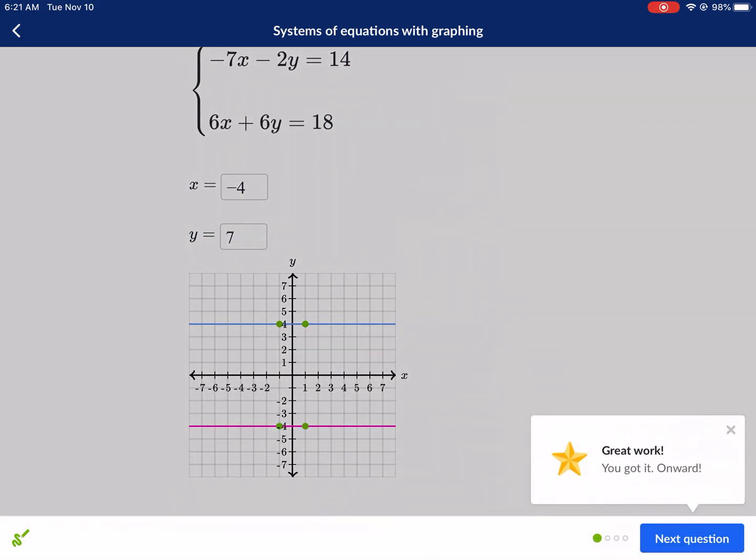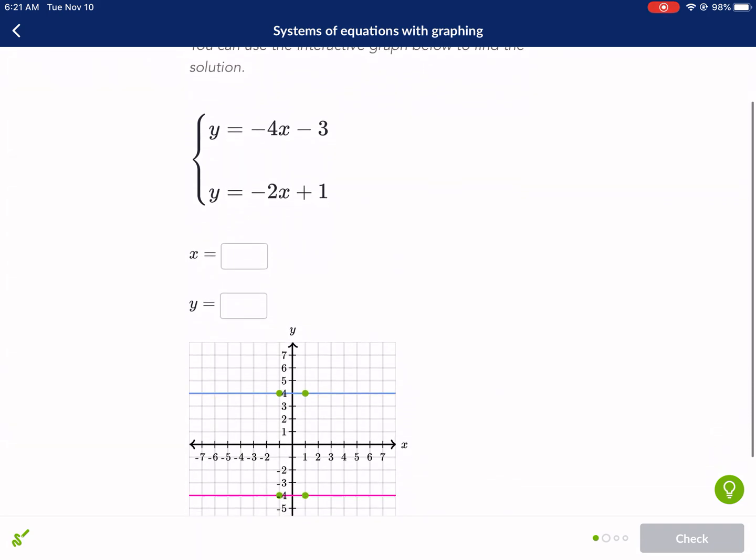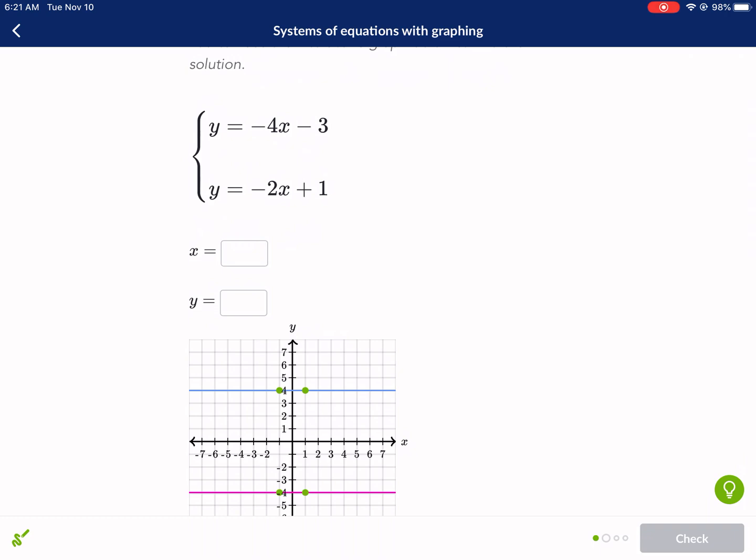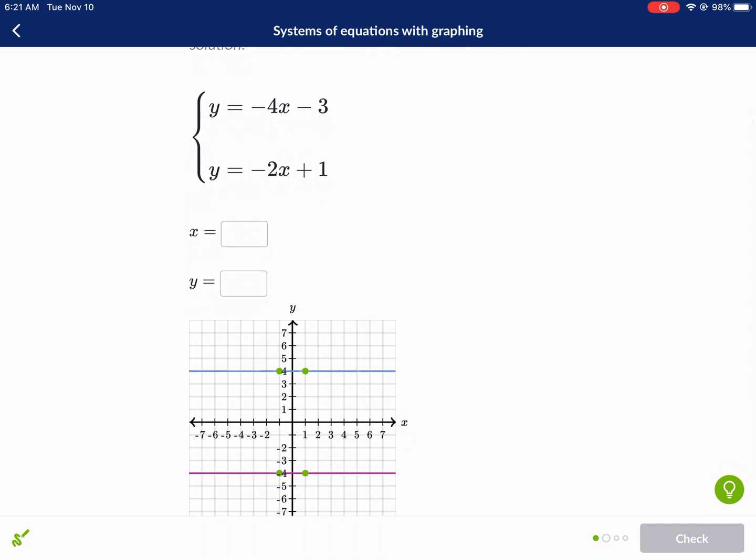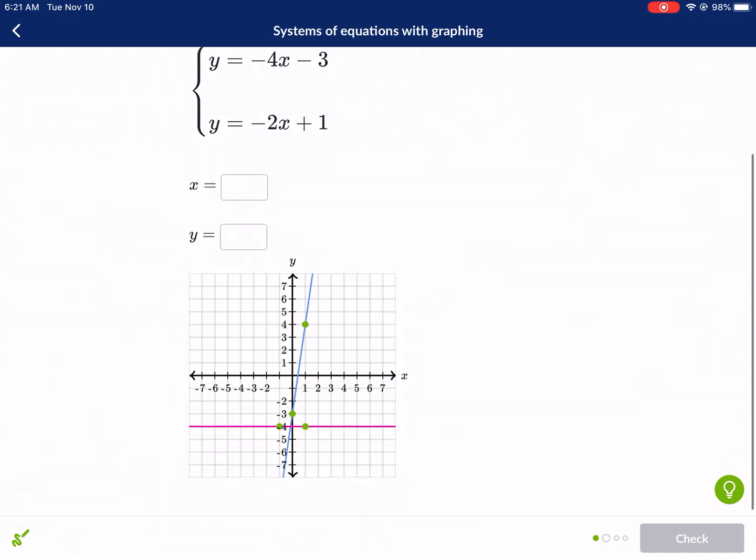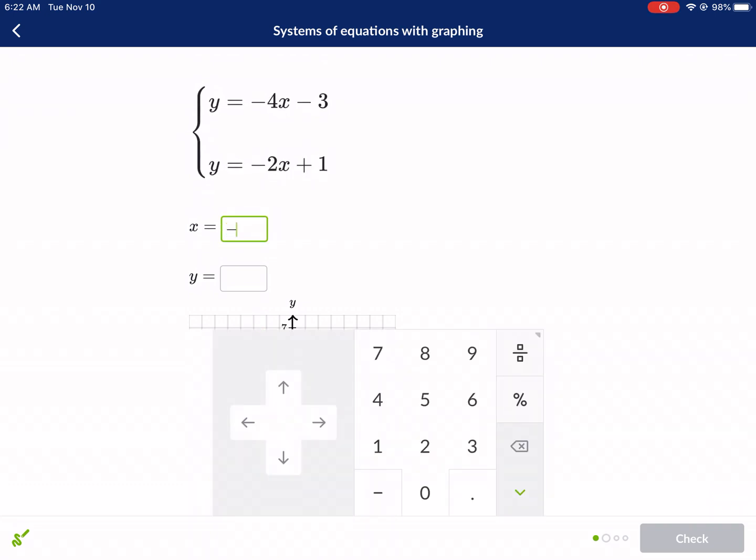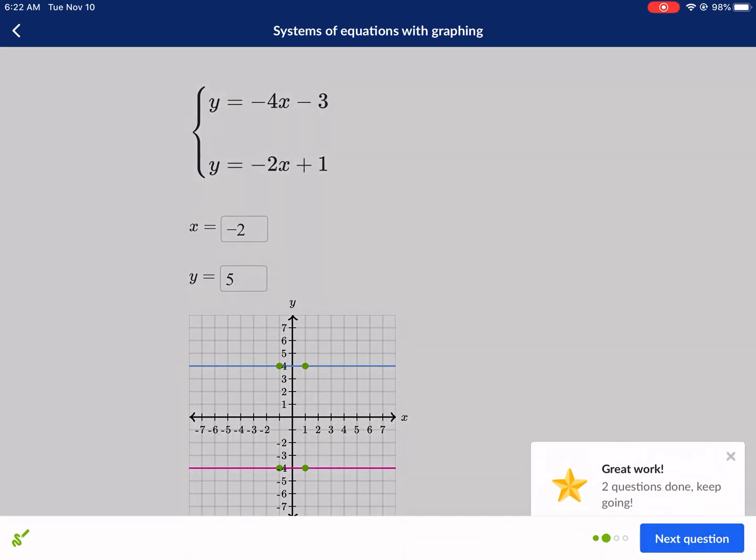So I'm going to speed this up for the next one. In this case we have slope intercept form. For the top one we're going to start with our y intercept of negative 3. And then our slope is negative 4 which means we're going to go down 4 and to the right 1. Now for the blue one we're going to start at y intercept of 1 and we're going to go down 2 to the right 1 and we're going to see where they intersect. It looks like negative 2 comma 5.